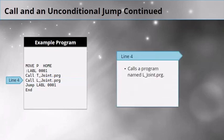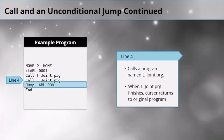Line 4 calls a program named l-joint. When this line executes, the robot completely leaves the current program and runs the l-joint program. When program l-joint finishes, the cursor returns to the original program, one line below that call statement.